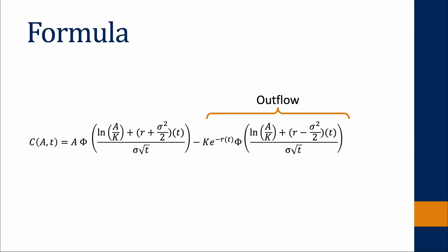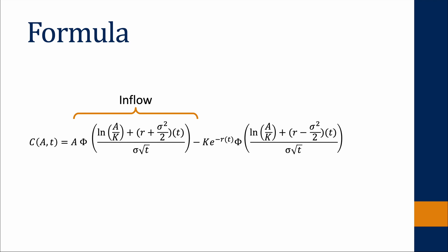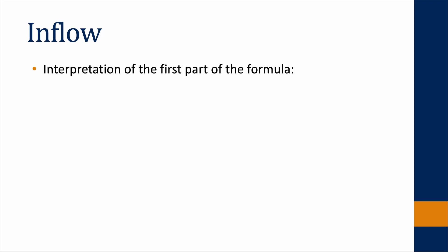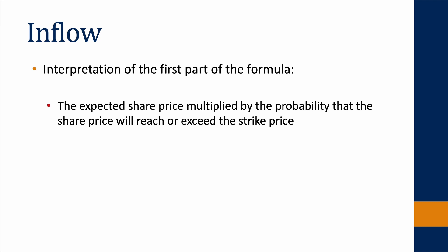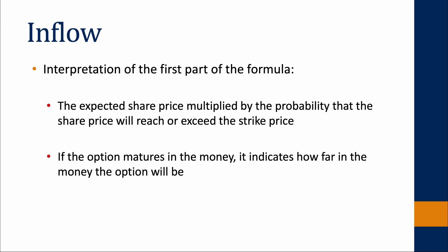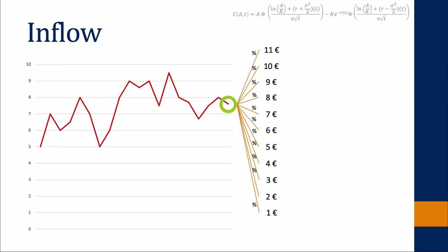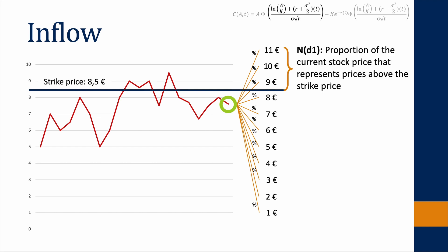Now that we have understood the outflow, we can focus on the first part of the formula: the inflow. The inflow represents what the buyer of the option receives — the potential receipt of the share. Therefore, the inflow represents the expected share price multiplied by the probability that the share price will reach or exceed the strike price. To explain this in more detail, consider an option on a stock with a current price of 7.50€ and a strike price of 8.50€. The current stock price of 7.50€ represents all potential future values of the stock weighted by their probability. The goal of the probability of the inflow is to determine the proportion of the current stock price that represents potential future stock prices exceeding the strike price.